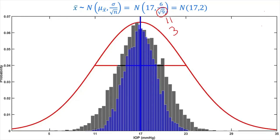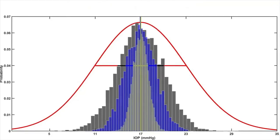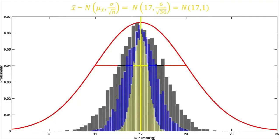Let's do this one more time with a sample size of 36. As expected, the mean of the yellow histogram is the same as the population mean, with an even smaller standard deviation — 6 divided by the square root of 36 equals 6 over 6, which is 1. So as you can see, if we increase the sample size to infinity, the standard deviation of the histogram will approach zero and the sample mean will become exactly the same as the population mean. In a nutshell, this is what came to be known as the central limit theorem.